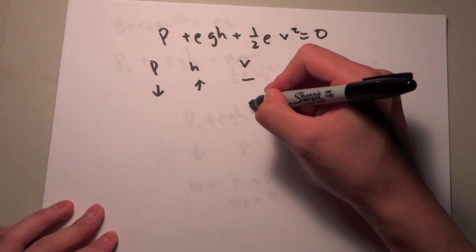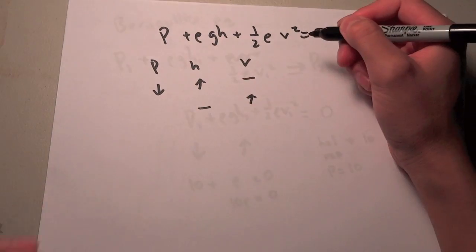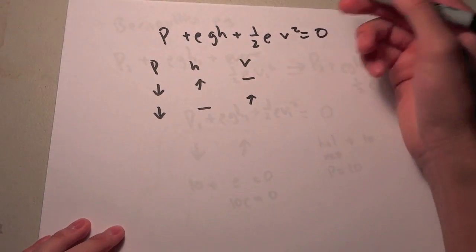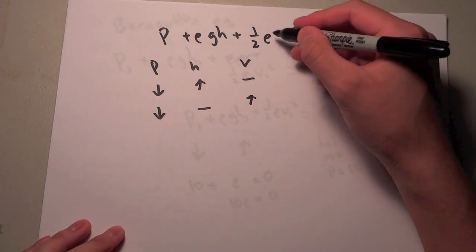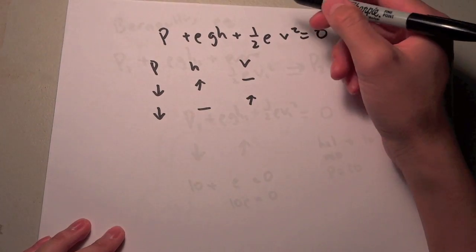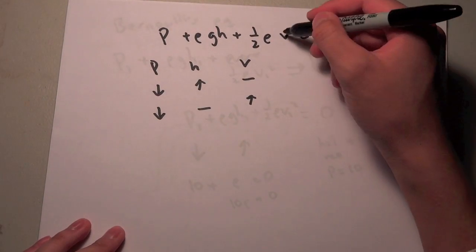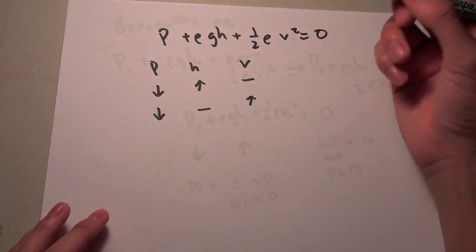When we increase the velocity, keep the height constant, we would also see a decrease in pressure for similar reasons. If we want to keep this entire term constant and we're increasing the velocity, we're going to have to decrease the pressure in order to compensate.